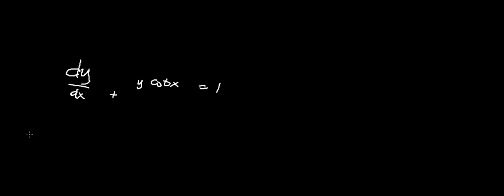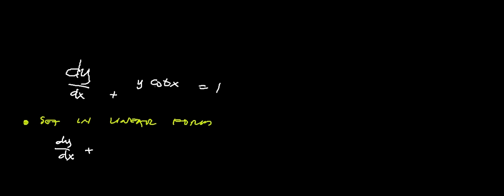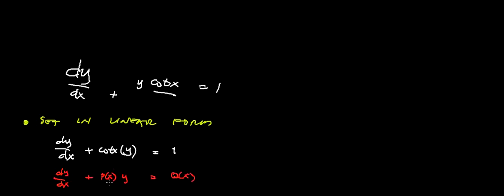We set it in linear form: dy/dx plus P(x) multiplied by y is equal to Q(x). This is our y and this is our P(x), and our Q(x) is 1. So our standard form is dy/dx plus P(x)·y equals Q(x). Therefore, our P(x) here is cot(x) and our Q(x) here is 1.